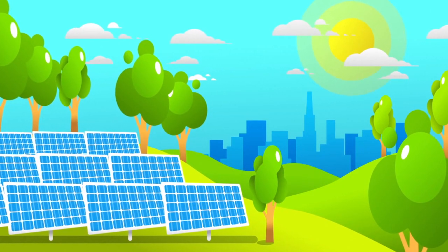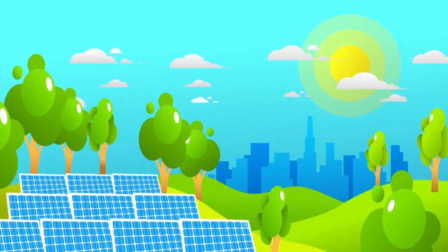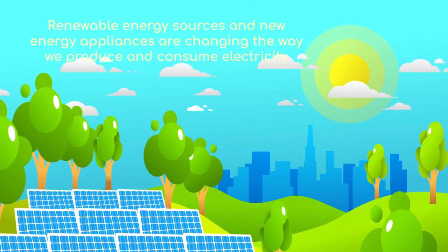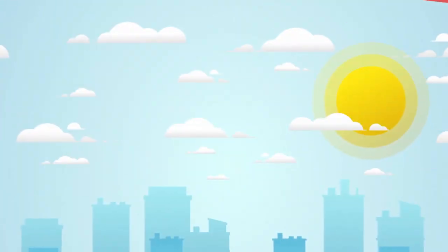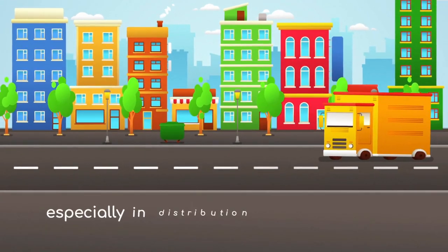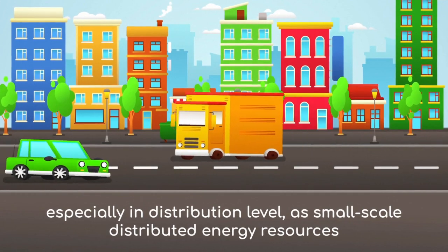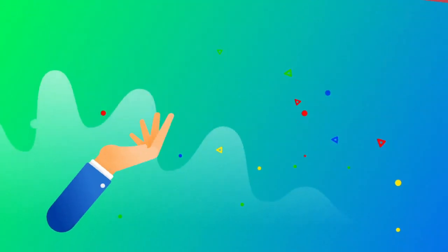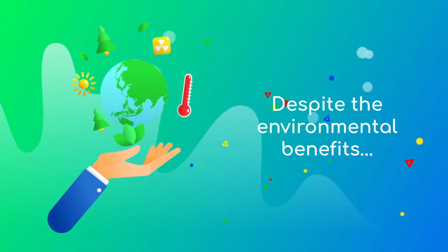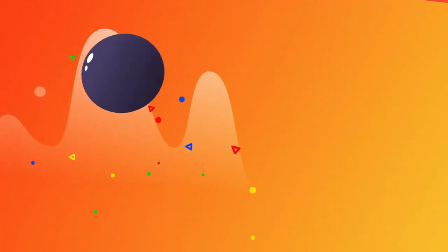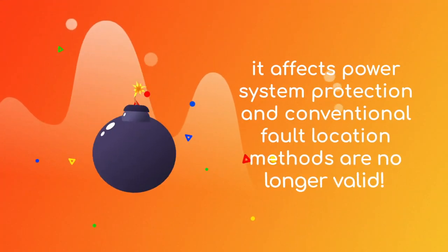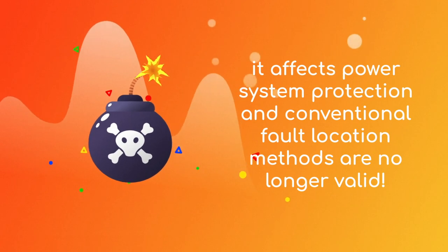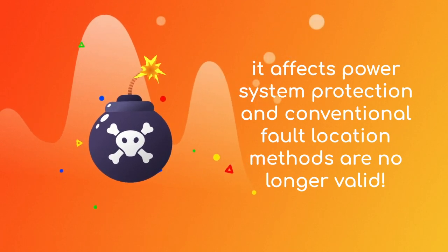Renewable energy sources and new energy appliances are changing the way we produce and consume electricity, especially in distribution level as small-scale distributed energy resources. Despite the environmental benefits, it affects power system protection, which means that conventional fault location methods are no longer valid.